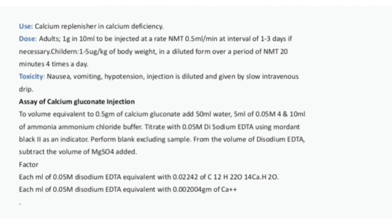Assay of calcium gluconate injection: To a volume equivalent to 0.5 gram of calcium gluconate, add 50 ml water, 5 ml of 0.05 molar MgSO4, and 10 ml of ammonium chloride buffer. Titrate with 0.05 molar disodium EDTA using mordant black 2 as an indicator. Perform a blank excluding sample. From the volume of disodium EDTA, subtract the volume of MgSO4 added. Factor: Each ml of 0.05 molar disodium EDTA is equivalent to 0.02242 g of C12H22O14Ca·H2O, and 0.002004 g of calcium.